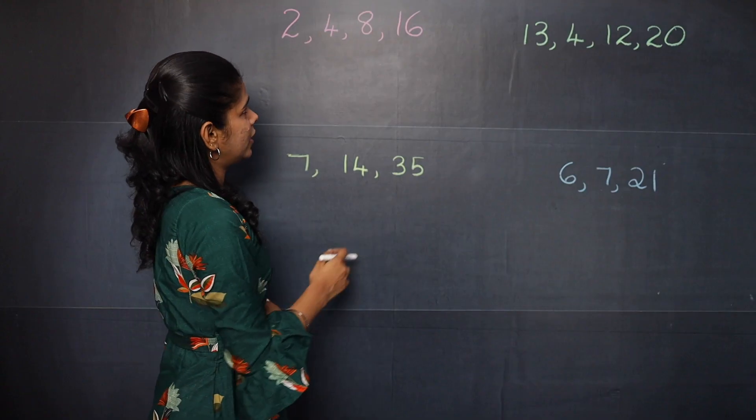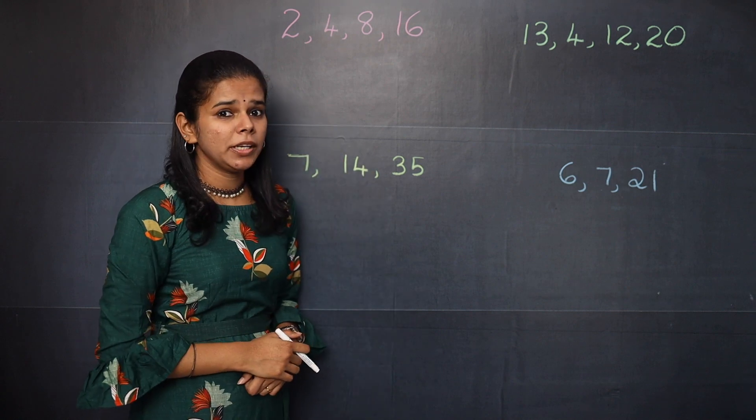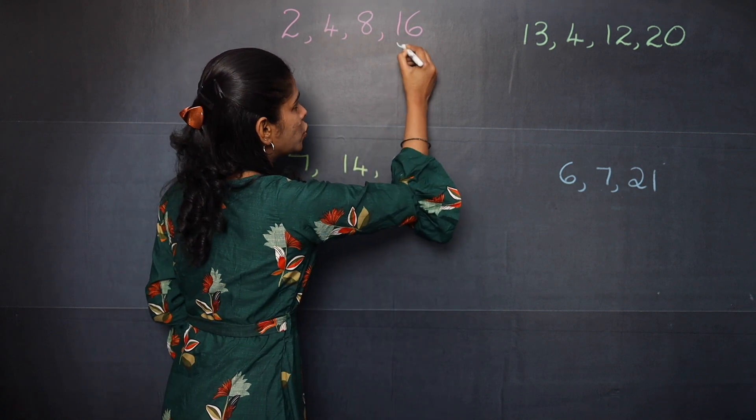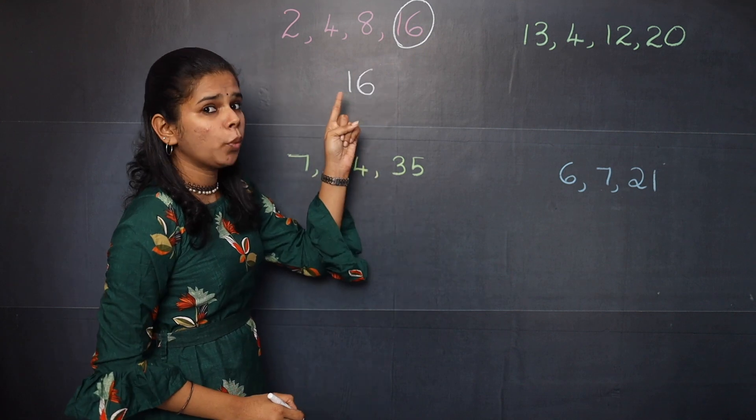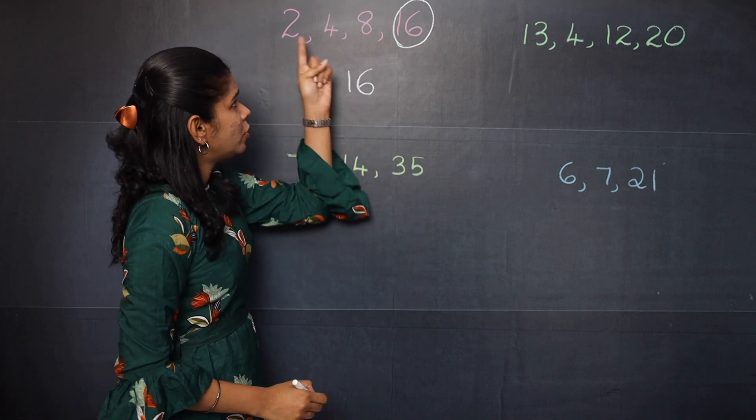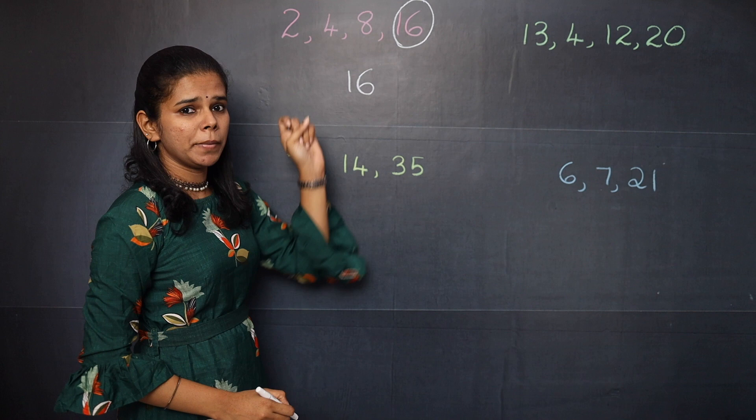In the first question, from the given set of numbers, you should choose the bigger number. So bigger number is 16. You should check whether 16 is divisible by the given numbers.